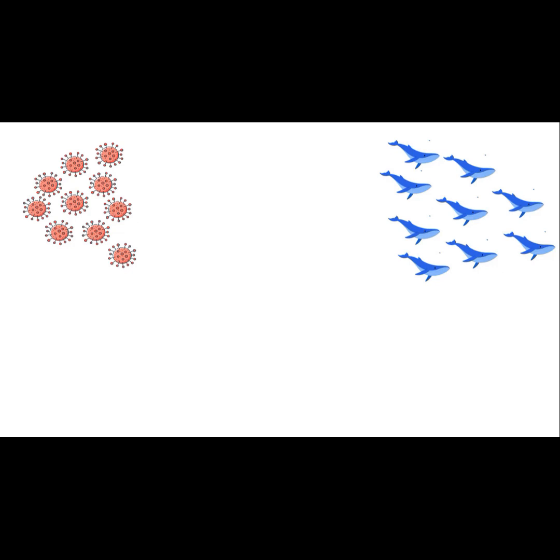Now, here is the most fascinating part. The total weight of those 10 to the power 31 viruses in our oceans is equivalent to 75 million blue whales. Yes, you heard that right. 75 million blue whales.